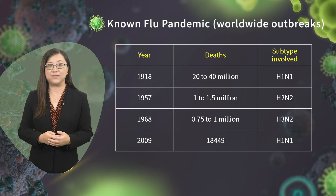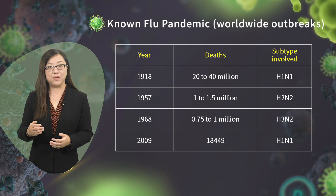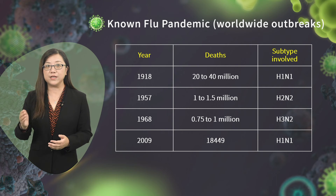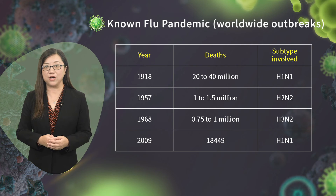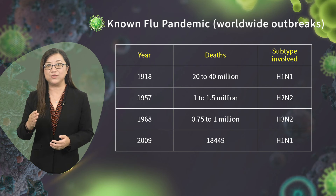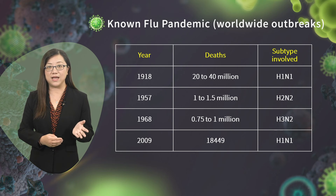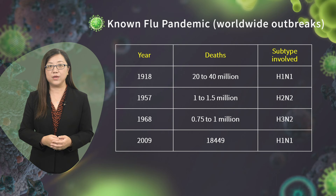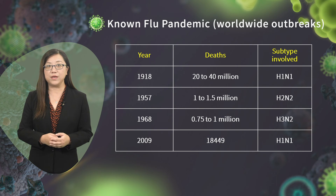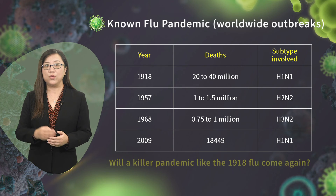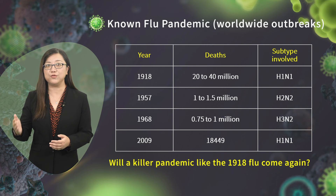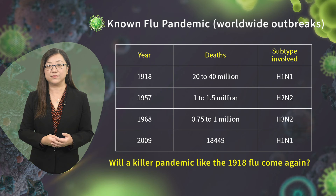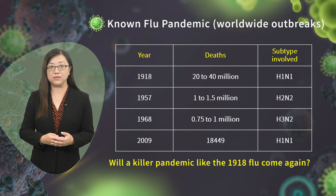Here are the known flu pandemics — pandemic means worldwide outbreak. The first pandemic in 1918 killed 20 to 40 million people; the subtype was H1N1. About 40 years later, 1 million people died from subtype H2N2. Ten years after that, another 1 million deaths from H3N2. And then in 2009, H1N1 again. We can see every 10 to 40 years there will be a new pandemic. The question is: will a killer pandemic like the 1918 flu come again? We will discuss this question during this lecture.